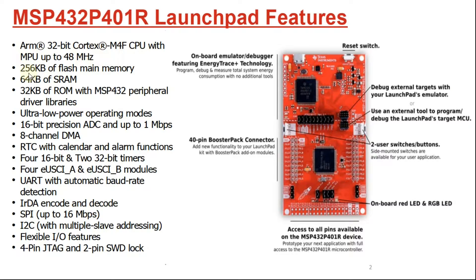It has 256 kilobytes of flash memory, which is the main memory, and then it has 64 kilobytes of SRAM, which is basically the RAM memory. It also has a dedicated 32 kilobytes of RAM memory for the MSP432 peripheral driver libraries.